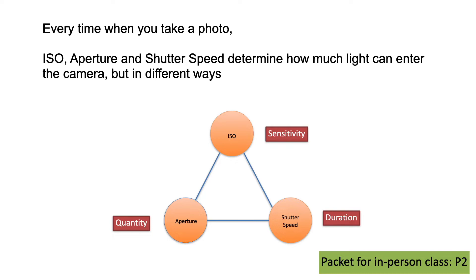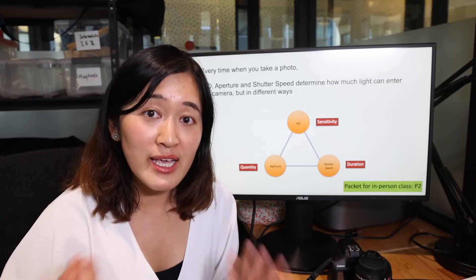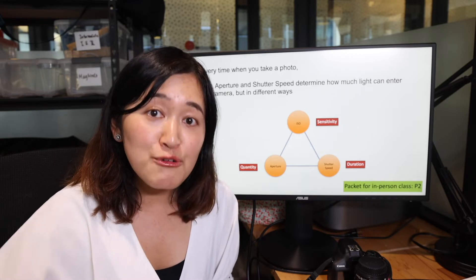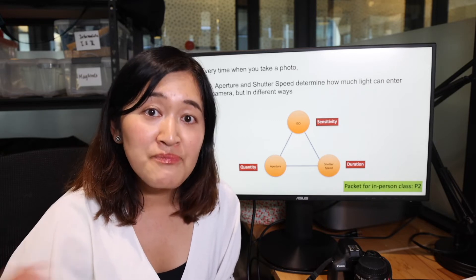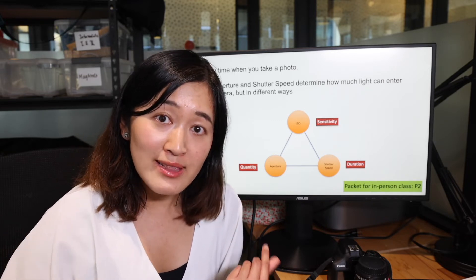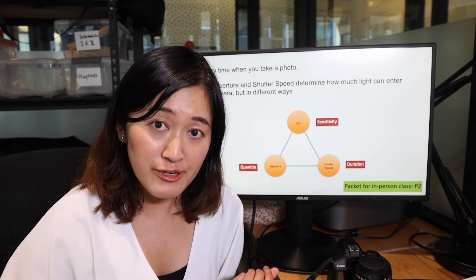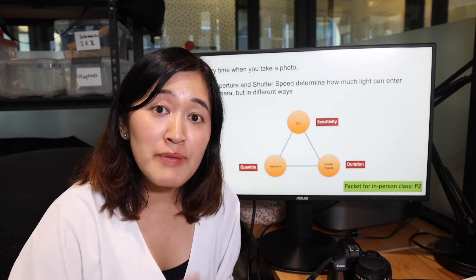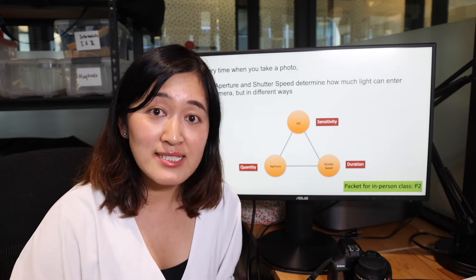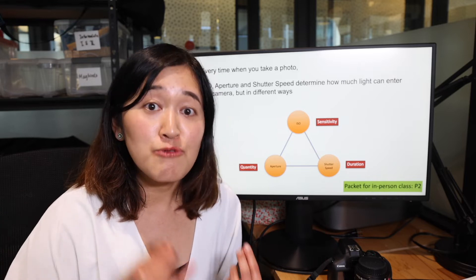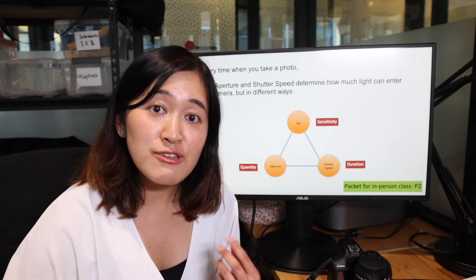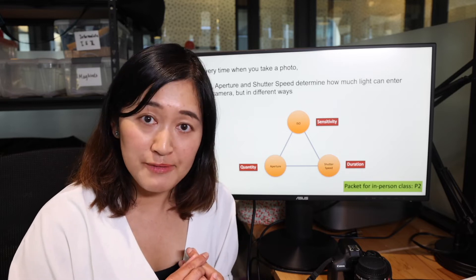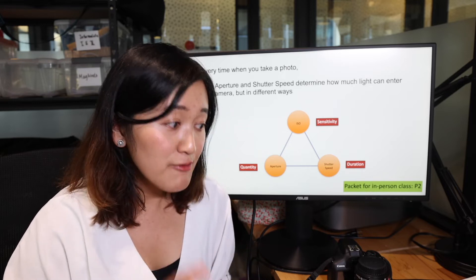ISO is the sensitivity of the camera. The higher the ISO, the more sensitive the camera is towards light. When you increase the ISO, the camera will be able to pick up more light and your picture will become brighter. But when you drop the ISO, the camera won't sense as much light, so your picture will become darker.